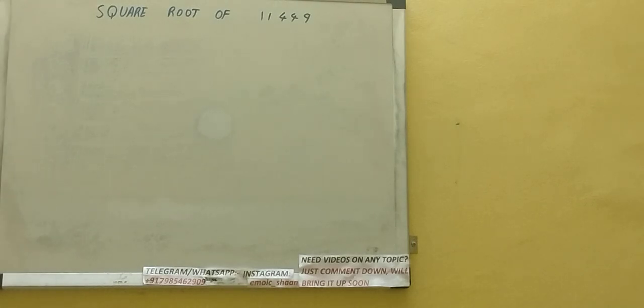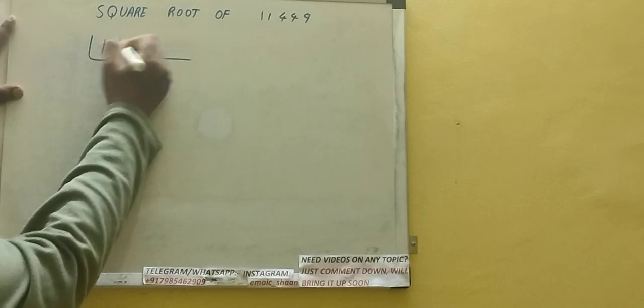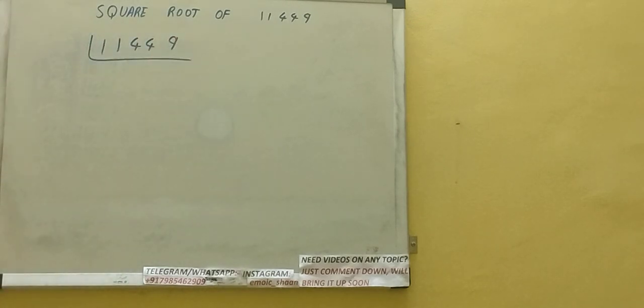Hello friends, and in this video I'll be helping you with the square root of the number 11449. So let's start. First of all, we need to write down the number like this: 11449.